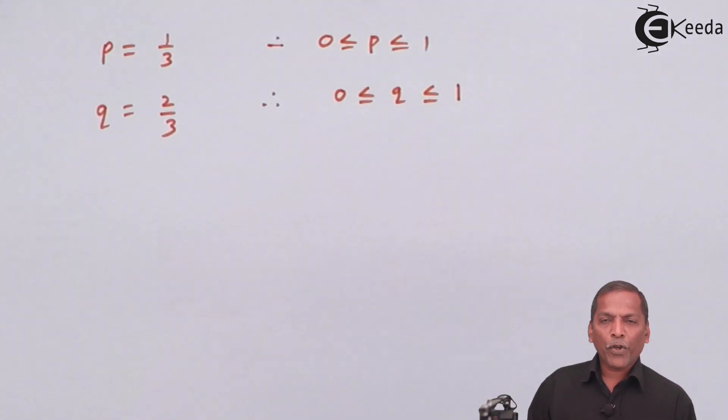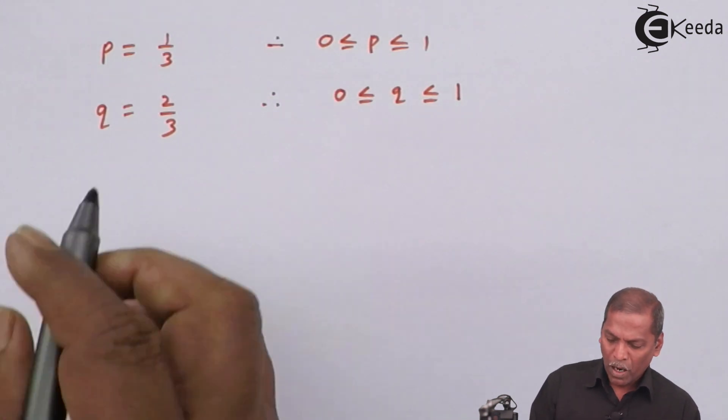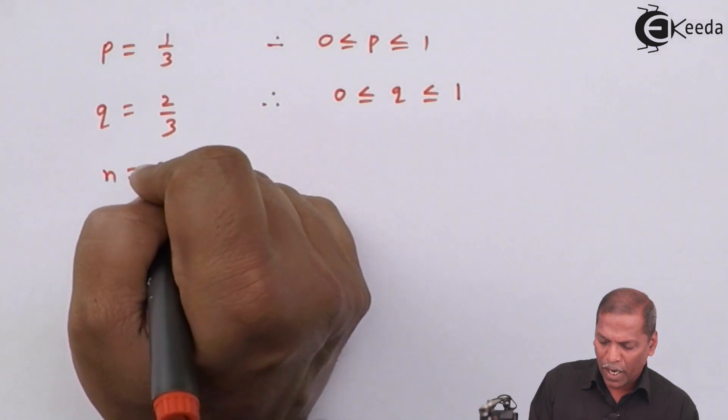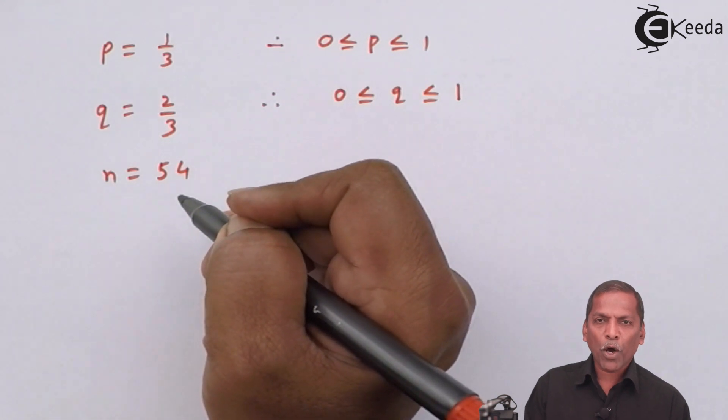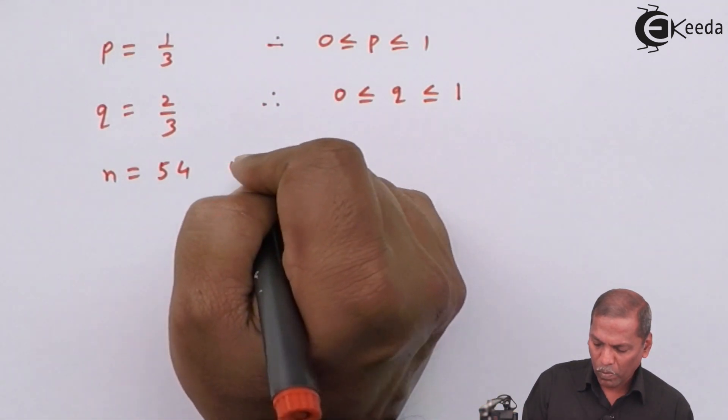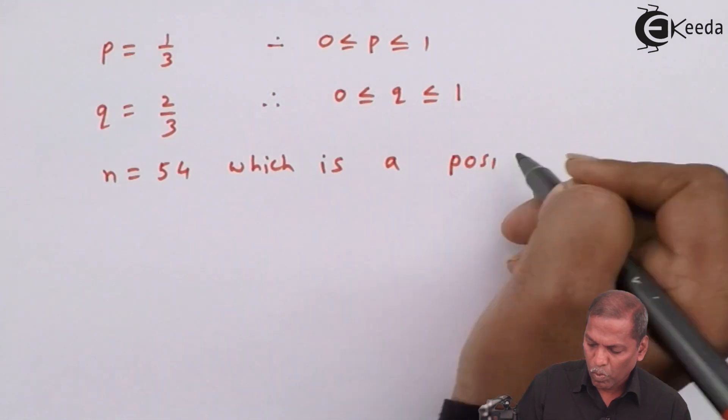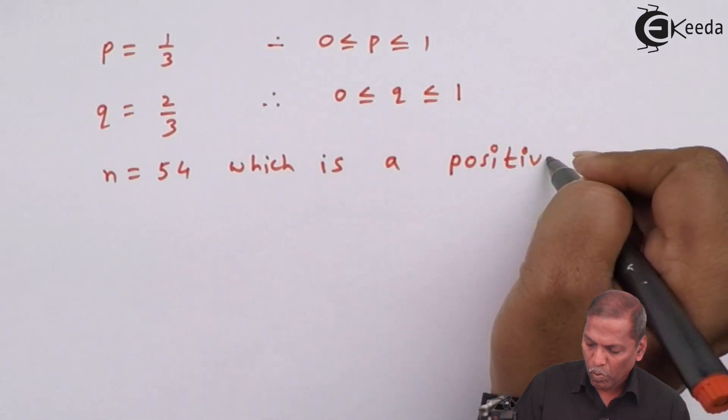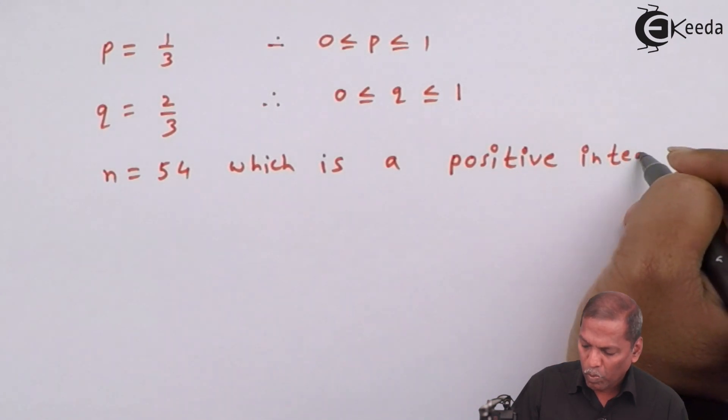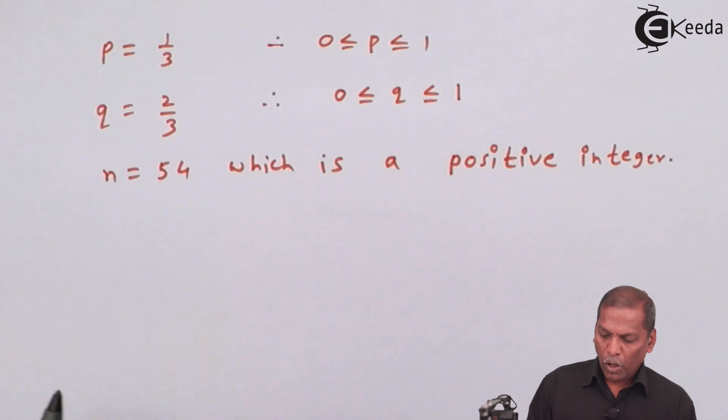It means the value of q lies between 0 and 1. And at the same time, the value of p is also lies between 0 and 1. And finally, we have n is equal to 54, which is positive integer. So this is all according to binomial distribution. And therefore, the answer of student is correct.